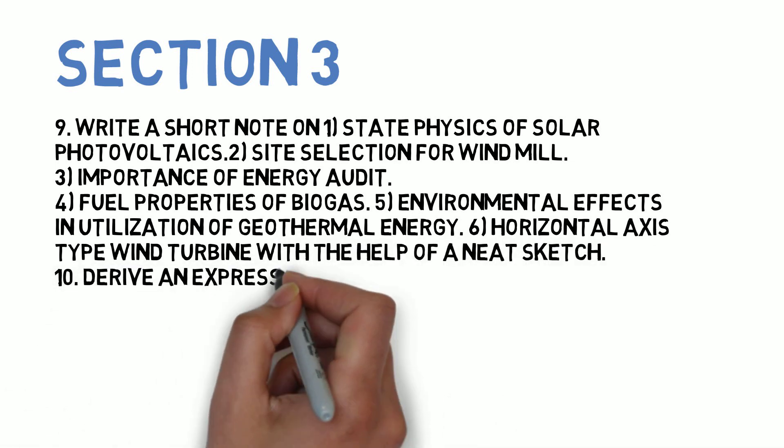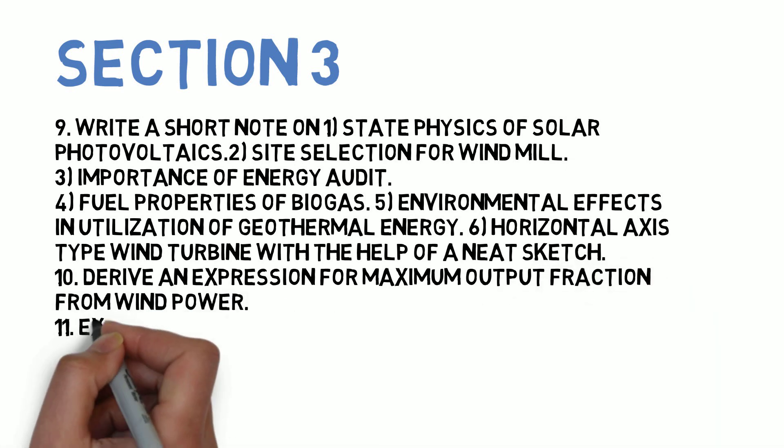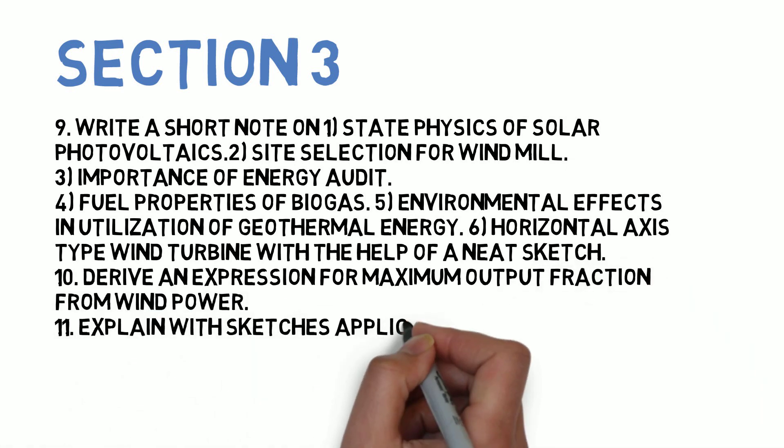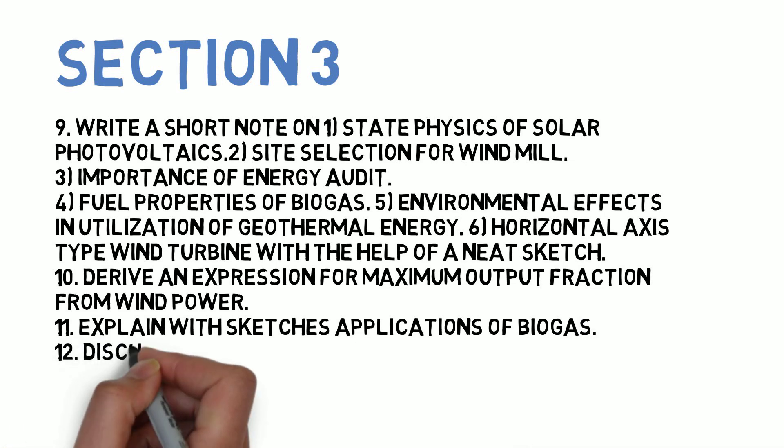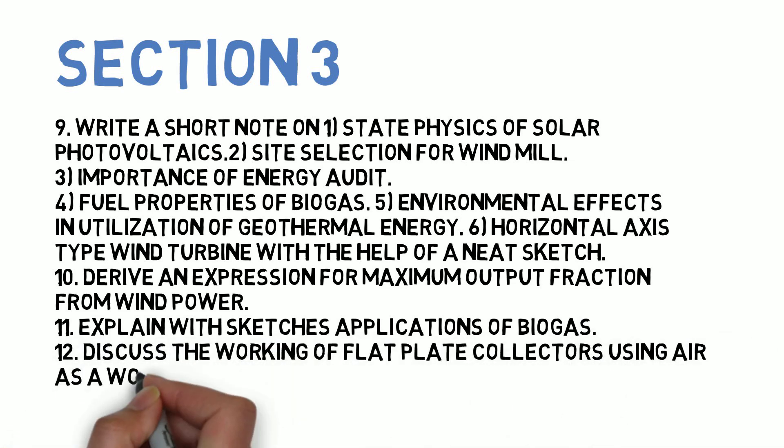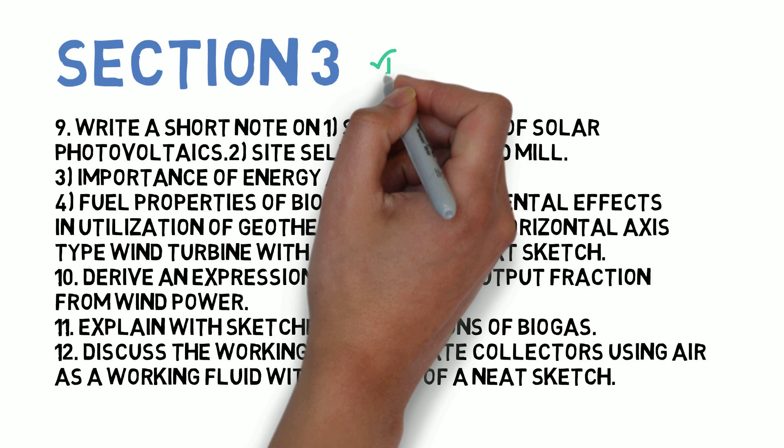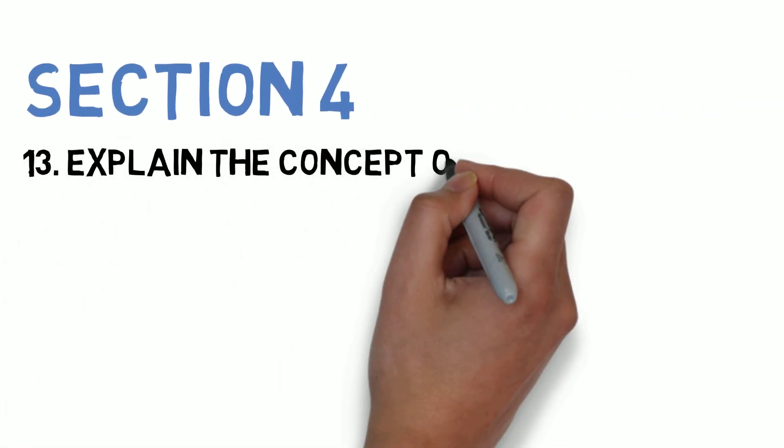Next is horizontal axis type wind turbine with the help of neat sketches. This is question number 9 wherein you have to do multiple short notes, make sure you prepare accordingly. The next question is derive an expression for maximum output fraction from wind power. Next, explain with sketches application of biogas. Next, discuss the various working of flat plate collectors using air as working fluid with the help of neat sketch. These four questions you have to do for Section 3.